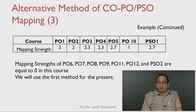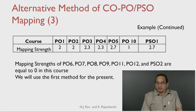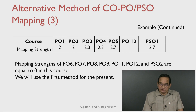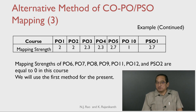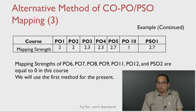Based on this alternative method, the mapping strengths would be: 2 for PO1, 2 for PO2, 2.3 for PO3, 2.3 for PO4, 2.7 for PO5, 1 for PO10, and 2.7 for PSO1 — showing only non-zero values. The mapping strengths to PO6 through PO12 and PSO2 are equal to 0. In the rest of the module, we will use the first method; however, the instructor is free to use the second method if the institute has a policy of doing so.